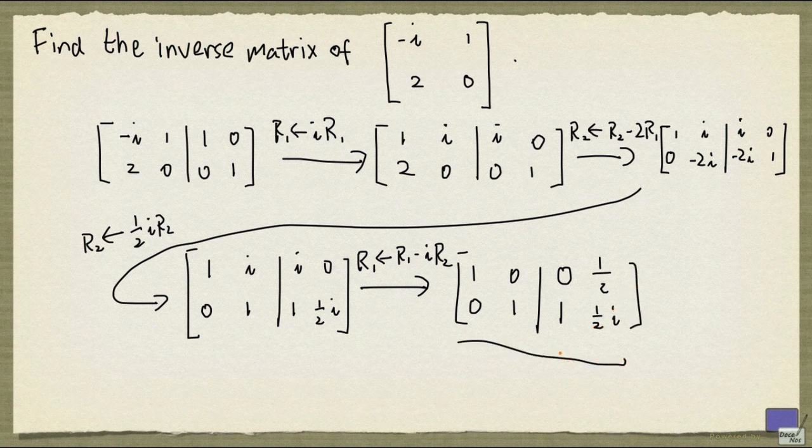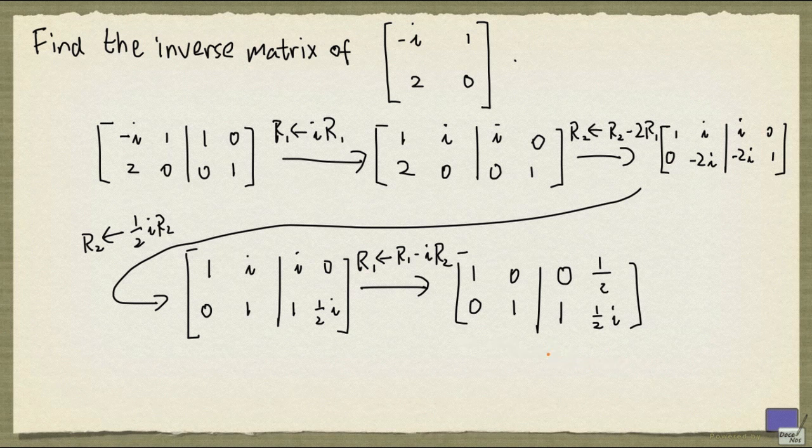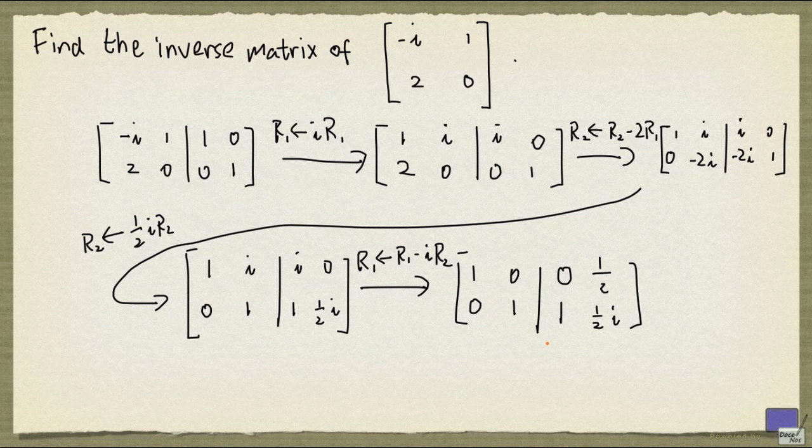And this matrix here is in reduced row echelon form, so we stop. Now notice that the first two columns give us the 2 by 2 identity matrix. So these two columns will give us the inverse matrix of minus i, 1, 2, 0.